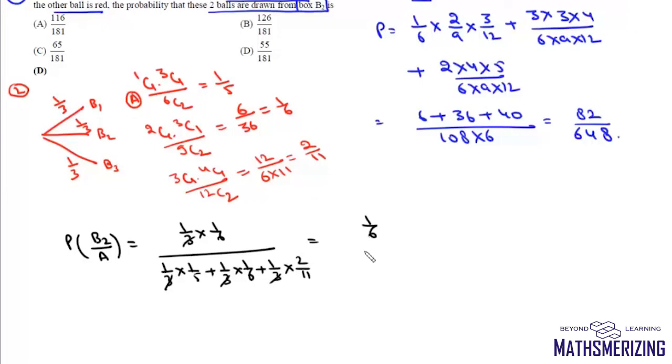Now this is 1 by 6 and here it is 66 plus 55 plus 60 upon 55 into 6. Now this 6 will cancel so this value will be 55 upon 126 plus 55 which is 181 and that's your option D.